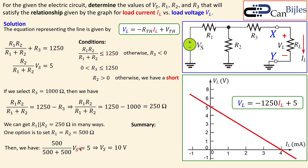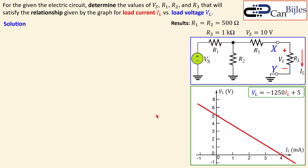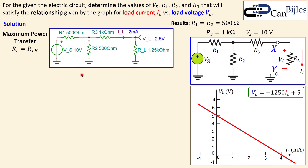In summary: R1 equals R2 equals 500 ohms, R3 equals 1 kilohm, and VS equals 10 volts. We now have everything for this design. Of course we need to verify this — we don't yet know if it really does the job — so let's look at the results in the simulations.